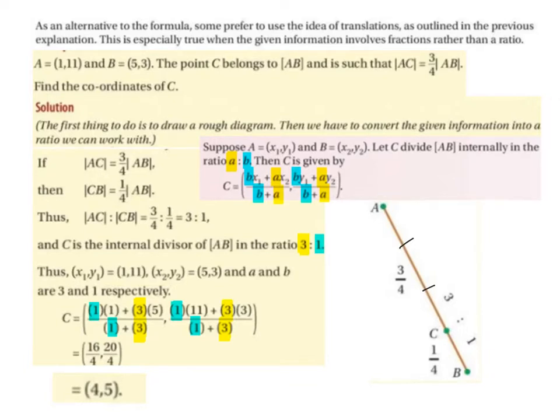So now we can write our ratio. We have 3 parts to 1 part. 3/4 to 1/4. So our ratio is 3 to 1. Thus, AC to CB is going to be 3/4 to 1/4, which can be simplified down to 3 to 1.